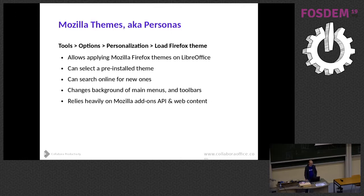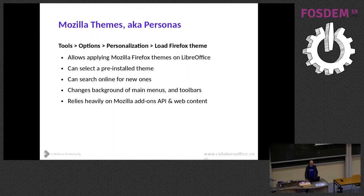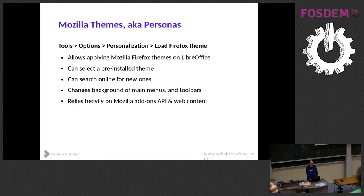There is a not very well known feature of LibreOffice which we call Mozilla Themes or Personas. You can find it with Tools > Options > Personalization and Load Firefox Themes. It allows you to apply Mozilla Firefox Themes to LibreOffice and use them to put some color into your LibreOffice installation. You can select pre-installed themes coming with your LibreOffice installation, or search online for new ones from the Mozilla Themes store.